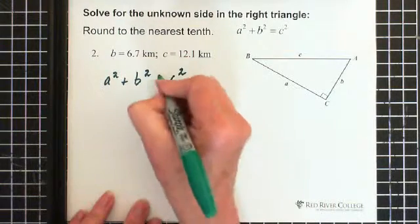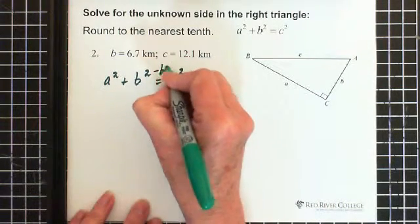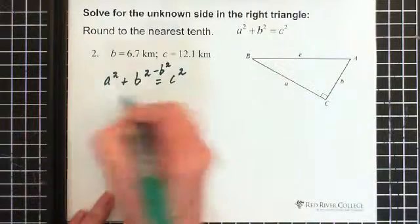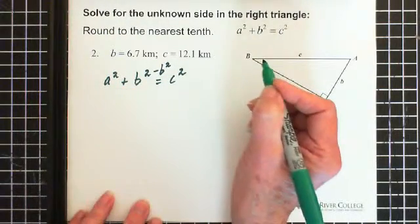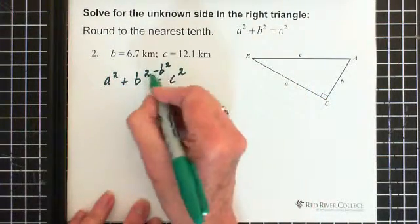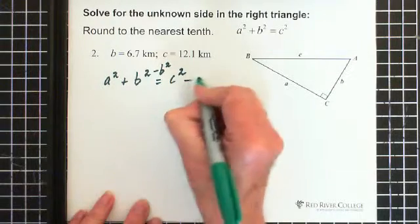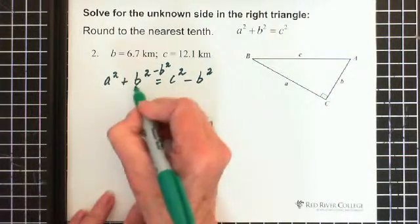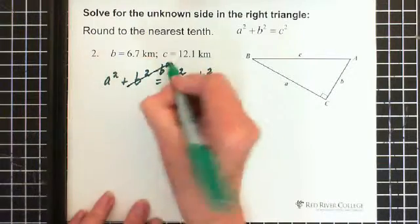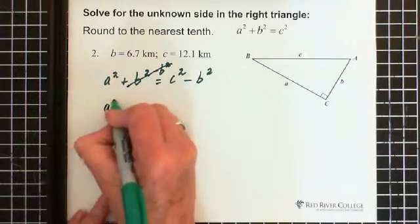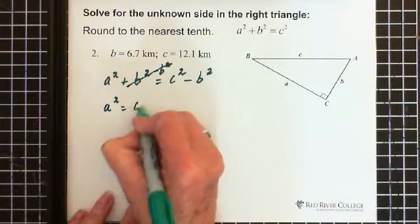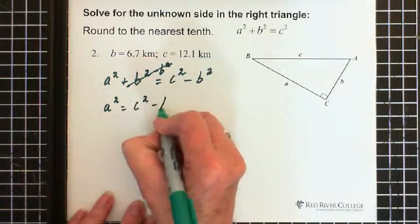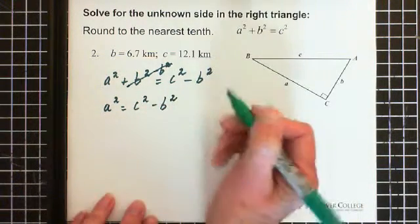Solving for a, so I'm going to subtract b² from the left side. That'll leave a² by itself. But if I subtract it from the left side, I have to subtract it from the right side. Now I cancel these two, and I'm left with a² = c² - b².